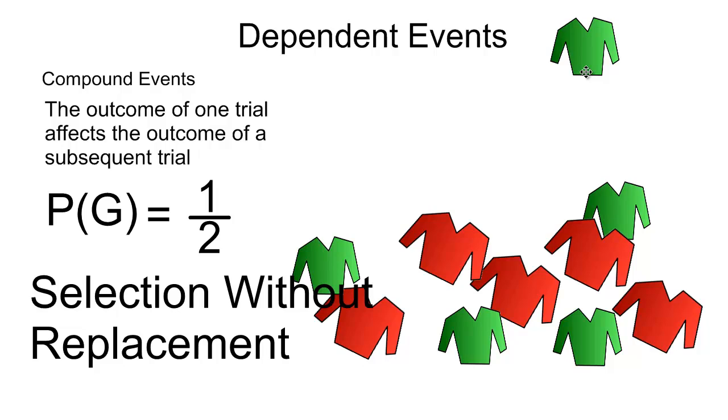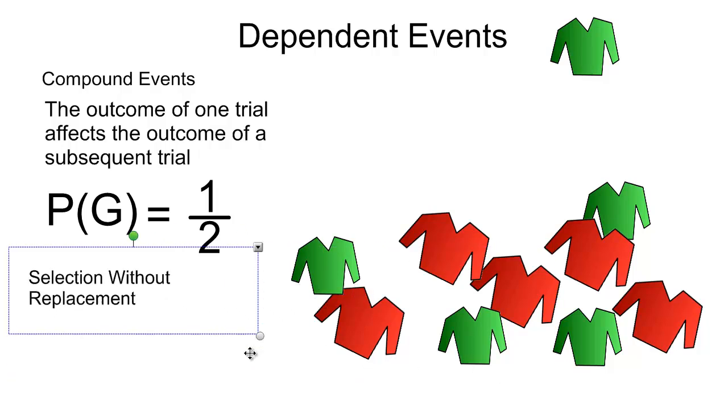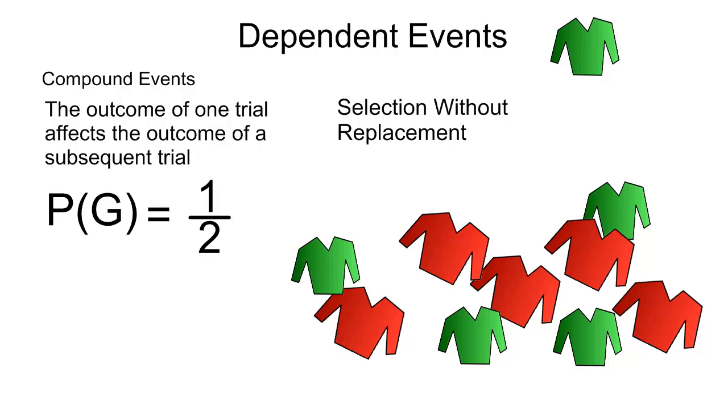I have my green cardigan. I'm not going to put it back. I want it. Maybe for later. Now what's happened here is this first trial has affected the sample space of my second event in this series of compound events.